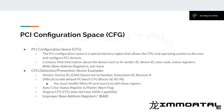Let's talk about the main detection and prevention vector for your DMA device, and that would be the PCI configuration space, or CFG. The CFG is a special memory region that allows the CPU and operating system to discover and configure your PCI devices. This contains vital information about the device, such as its vendor ID, device ID, class code, status registers, BARs, etc.